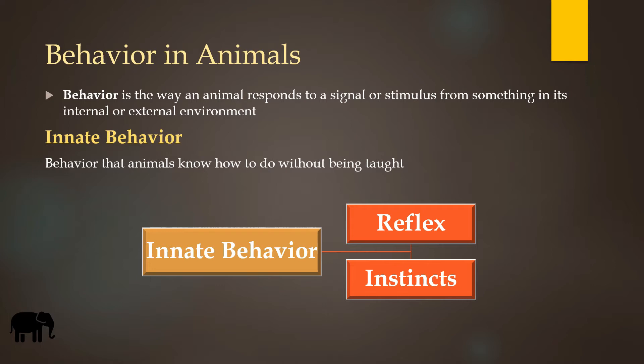Innate behavior: an innate behavior is a behavior that an animal knows how to do without being taught. Innate behavior is of two kinds: reflex and instincts.